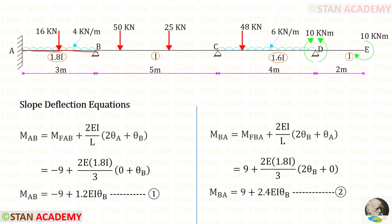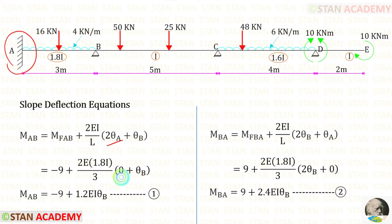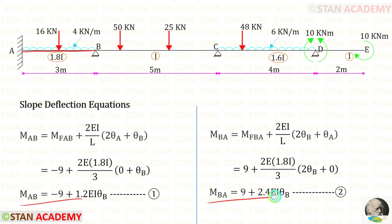In the slope deflection equations, first let us apply the fixed end moments. The length of AB is 3, and the moment of inertia is 1.8i, so instead of EI we apply 1.8i. At point A there is a fixed support, so there will be no slope — theta A will be 0. Finally, in span AB we have made two equations.